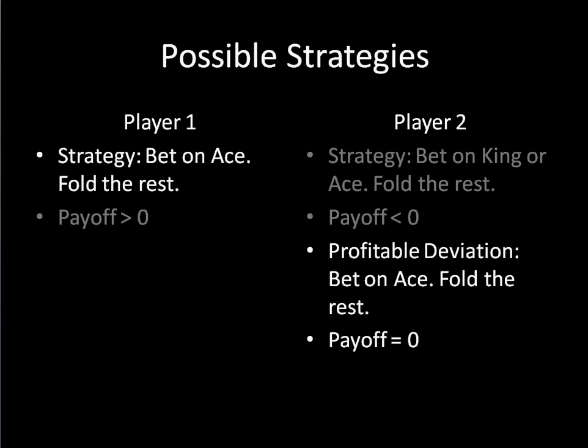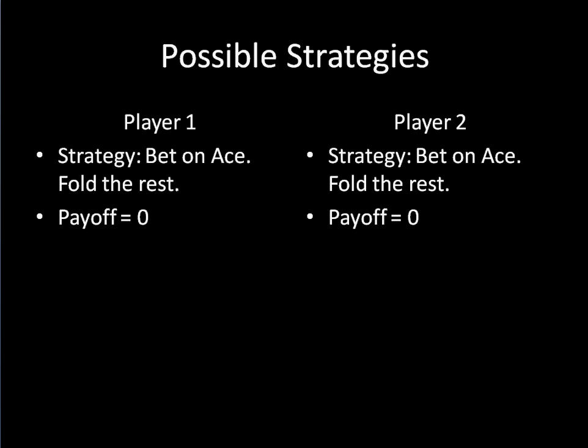But if player two switches to aces only — just like player one — they will only draw and she can't do better than that. Meanwhile, player one cannot profitably deviate either. Choosing to bet any other card will make his payoff negative, while folding everything keeps his utility at zero. So he doesn't have a profitable deviation. Thus this is an equilibrium: neither side has incentive to deviate from their strategies — betting on aces and aces only.